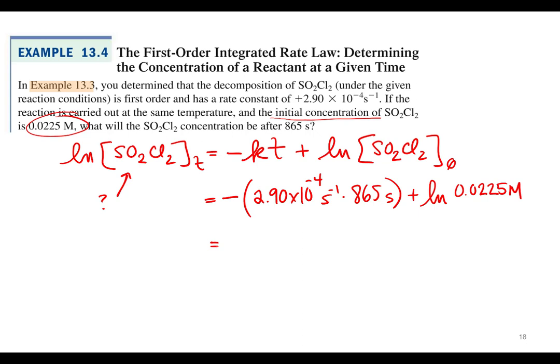And then we plug that into our calculator. So we take negative 2.90 times 10 to the negative 4th times 865 plus the natural log of 0.0225. That gives 5. Negative 1.8966. Negative what? I'm sorry, 1.89866. 866. We'll have to go to 36 figs. 89866. So we have 1.90.